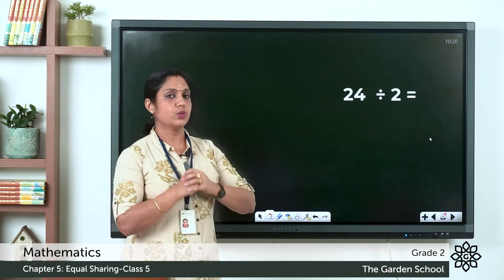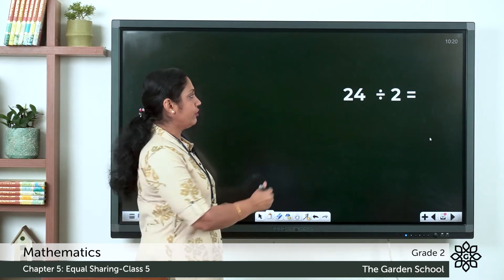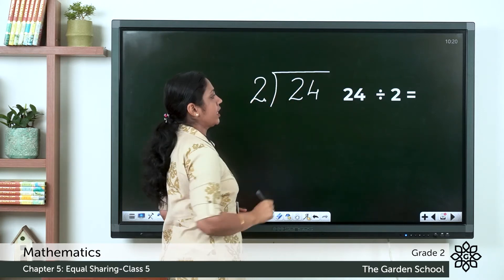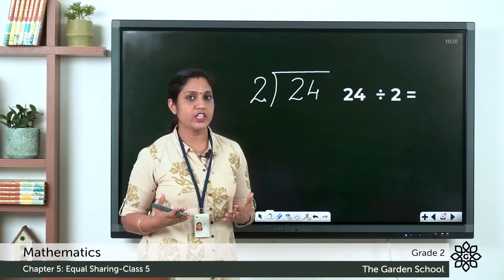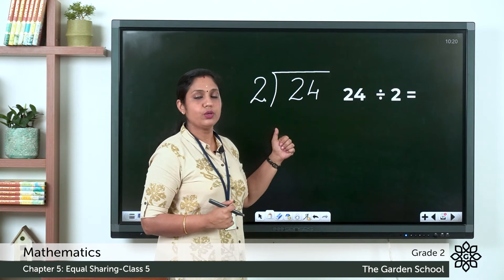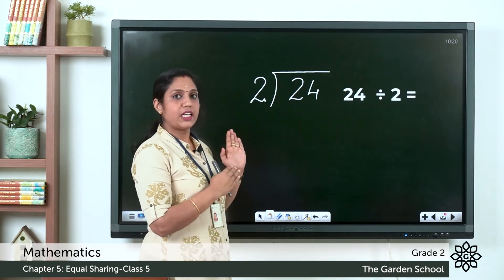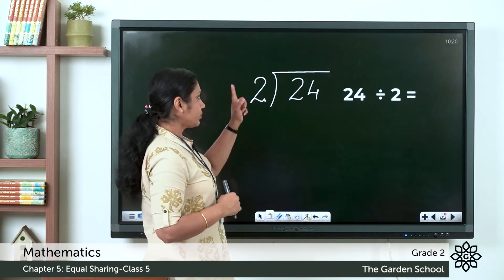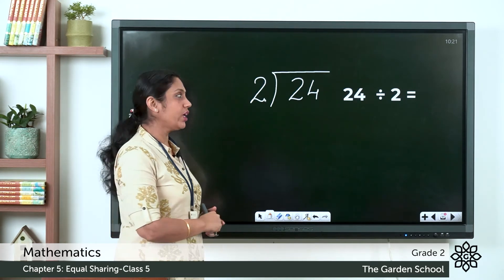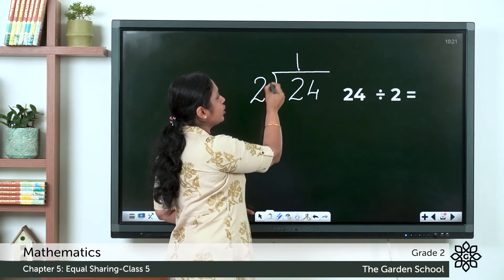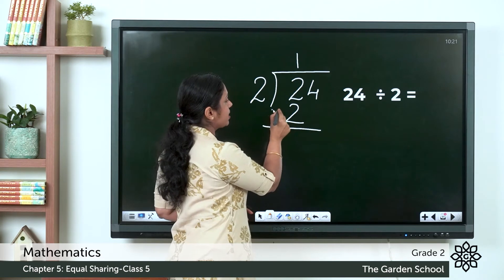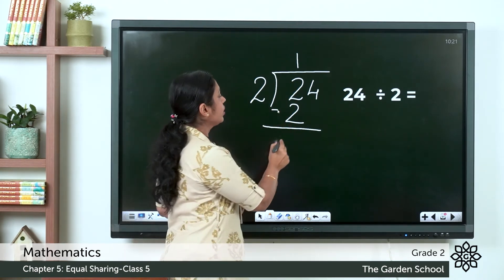Let's do 24 divided by 2. The dividend is 24 and the divisor is 2. Write 24 inside the line and 2 outside. We don't immediately know how many times 24 appears in the 2's table, so we take the digits one by one, starting from the left. Take the tens digit 2 first — 2 ones are 2, so write 1 on top of the tens place. Write 2 ones, that is 2, under the tens place. Subtract: 2 minus 2 equals 0.